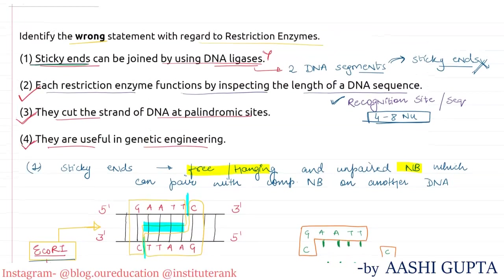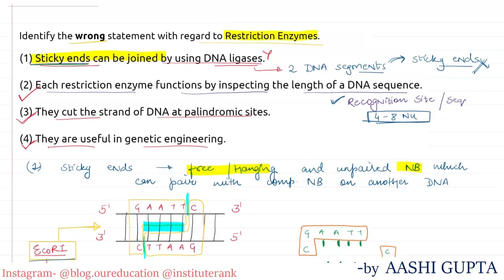So our correct answer — meaning the wrong statement about restriction enzymes — is the first option, which says sticky ends can be joined by using DNA ligase. I hope you understood. Thank you.